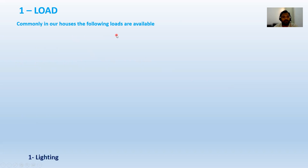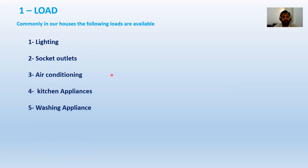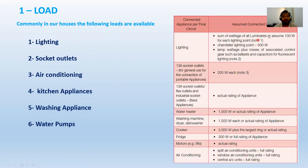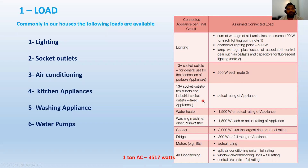In a typical domestic application, the loads include: lighting (assumed 100W or actual rating), chandeliers (500W), 13-ampere single sockets (200W), twin sockets (400W), water heaters (1500W), washing machines (1500W), cooker (3000W or actual rating), fridge (300W), motors (actual rating), and air conditioning (full rating — 1 ton = 3517W).